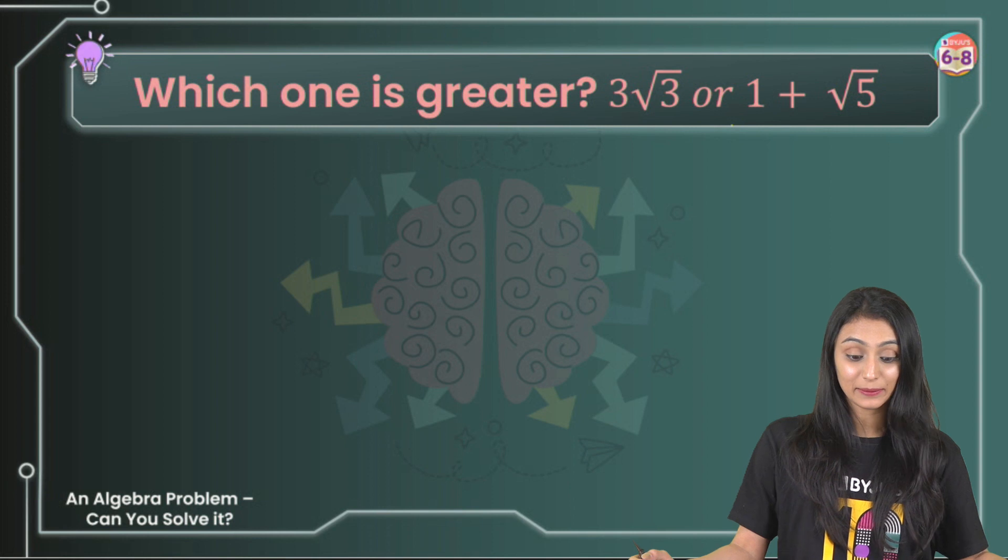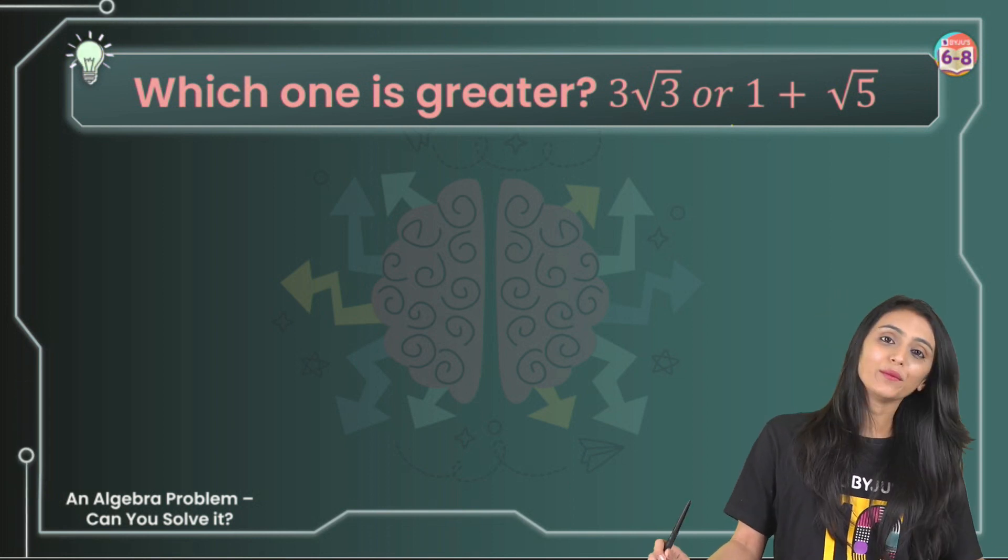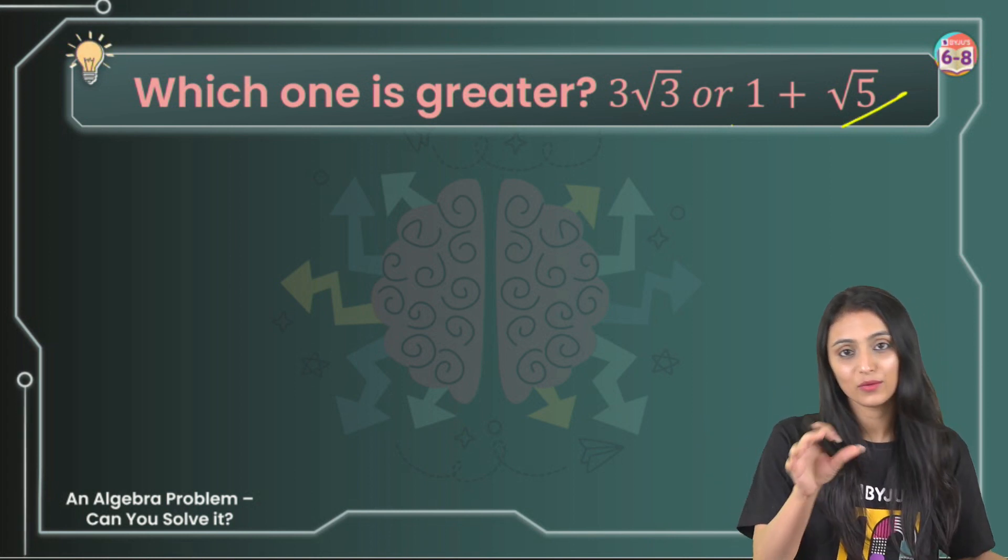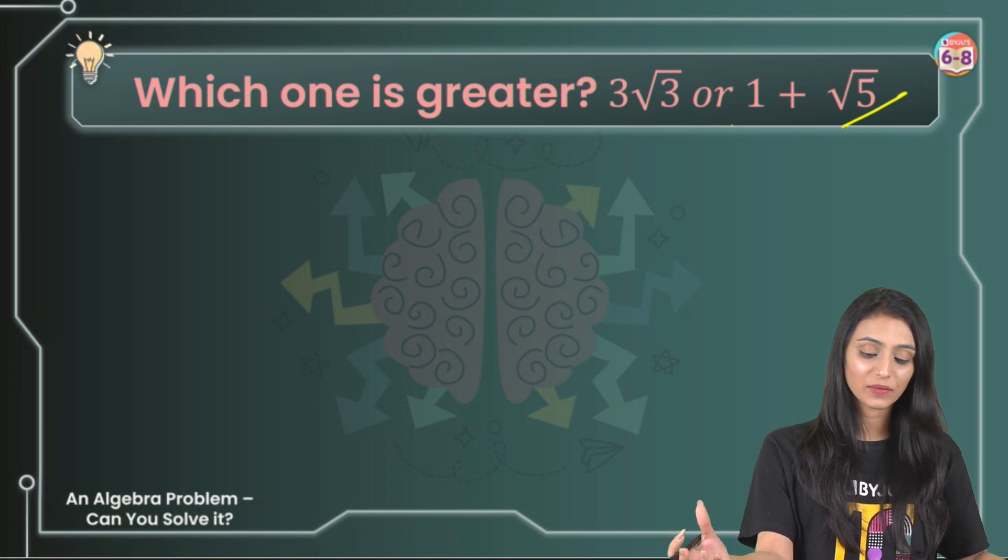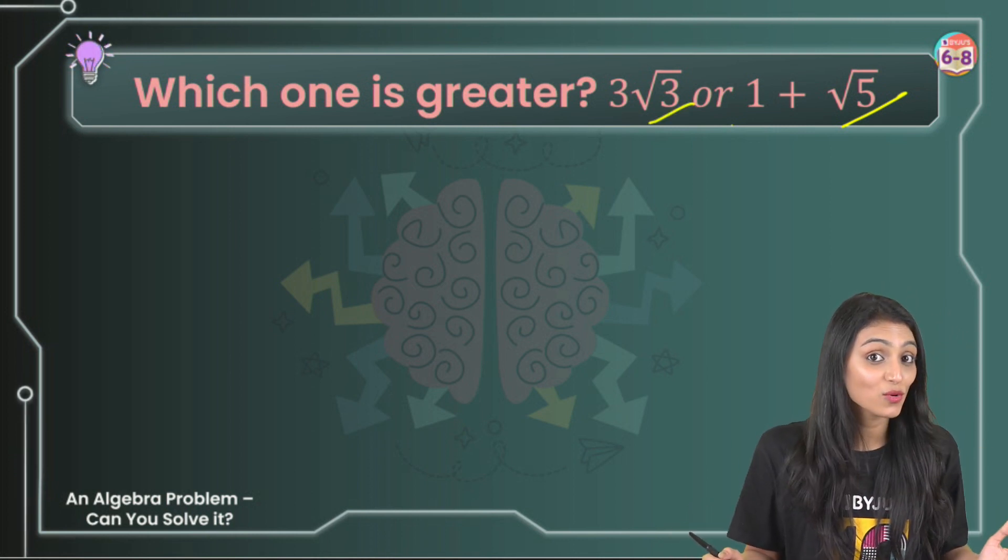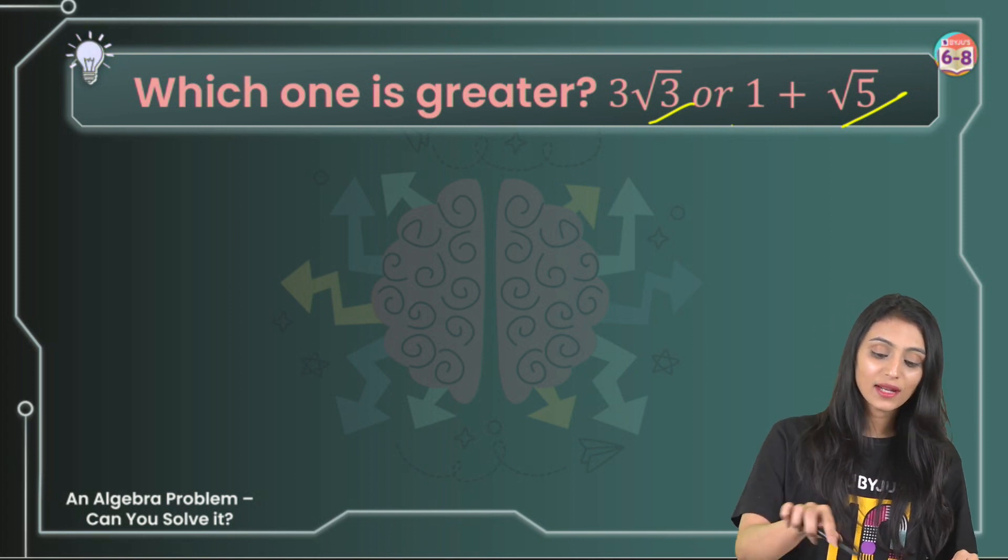Which one is greater, 3√3 or 1+√5? Now one way to do this, you would simply say that we would put the value of √5, add that value to 1 and get the result. Similarly for √3 as well. But not everybody knows how to find out the values for root numbers, right?